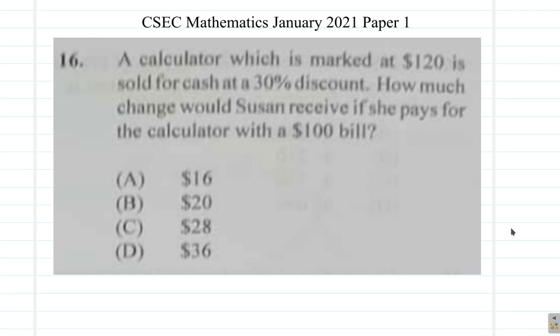Question 16, January 2021, paper 1, CSEC Mathematics. A calculator which is marked at $120, let me just highlight that because the copy of the paper is blurred, is sold for cash at a 30% discount. How much change would Susan receive if she pays for the calculator with a $100 bill?